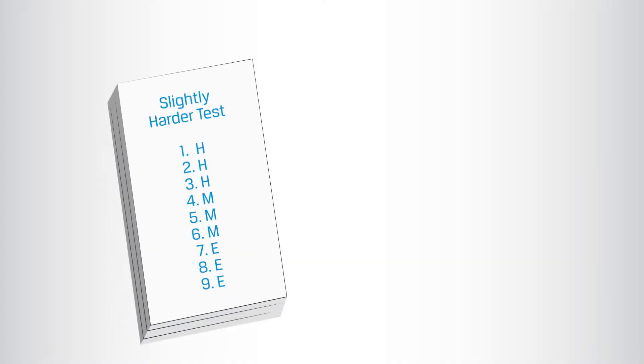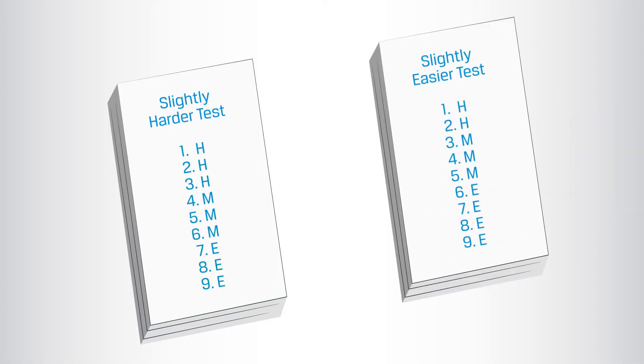Here is a simple example to explain this another way. This is a hypothetical nine-question test. The slightly harder version has three hard questions, three medium, and three easy questions. The slightly easier version has two hard questions, three medium, and four easy questions.